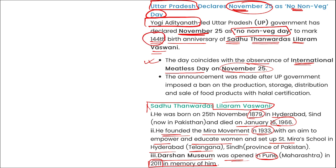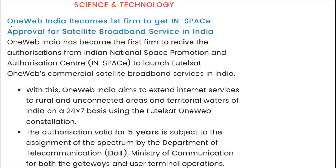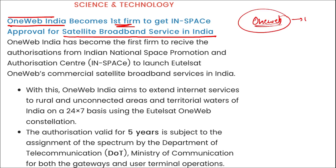OneWeb India became the first to get approval from IN-SPACe — Indian National Space Promotion and Authorization Centre — for satellite broadband services in India. OneWeb is a UK-based company building a constellation around Earth to provide satellite internet even in remote areas. This approval is for five years, after which renewal will be required.